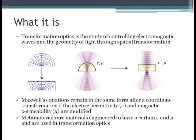Maxwell's equations remain in the same form after a coordinate transformation if the material parameters are changed. So this rectangle here is a different material than the half circle, and it's actually a metamaterial. Metamaterials are materials engineered to have certain epsilon and mu, or permittivity and permeability.